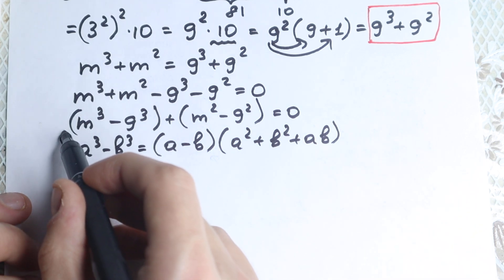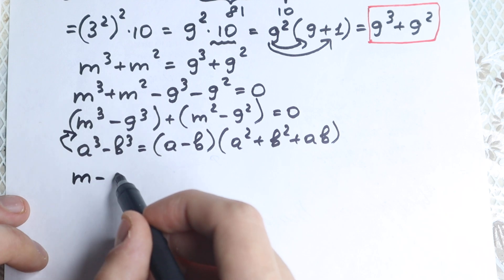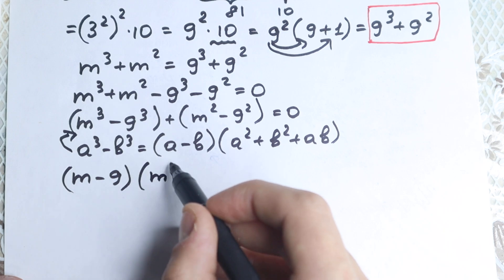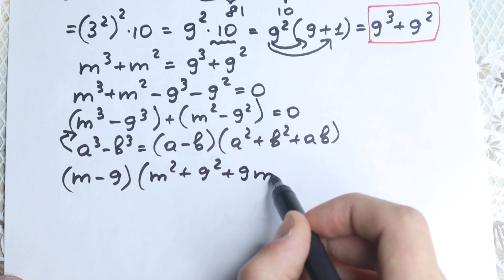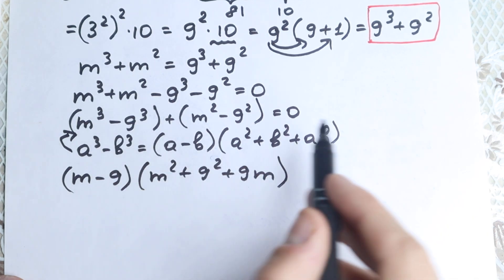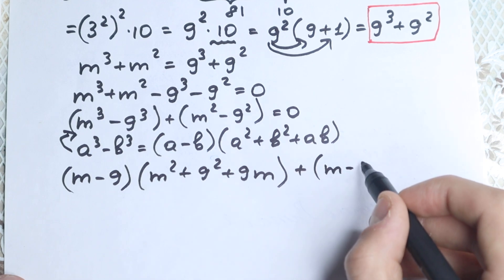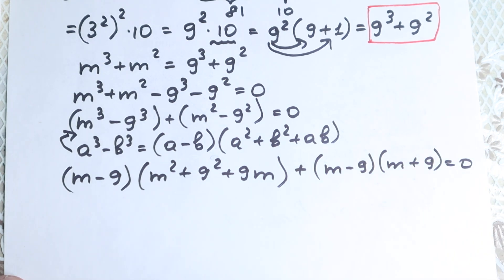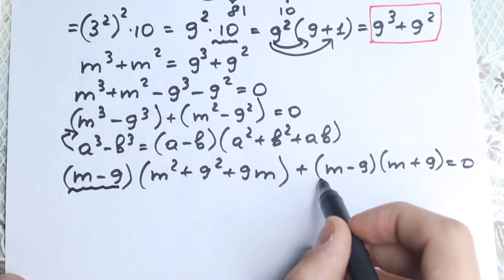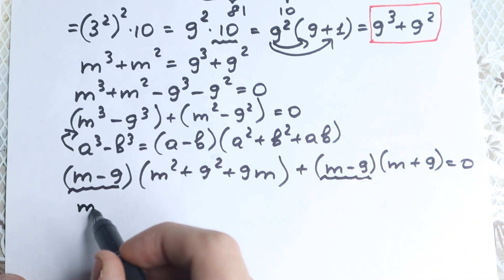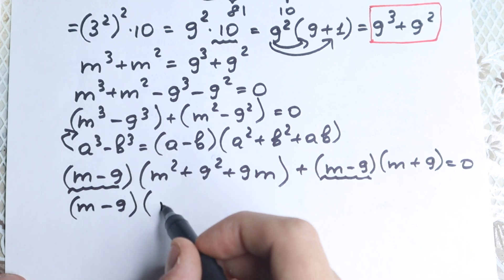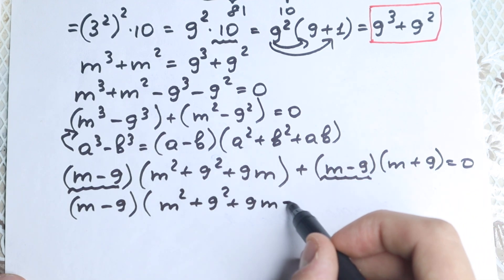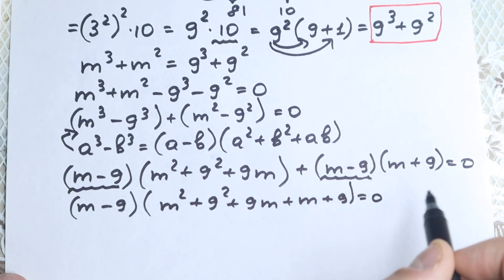Applying the difference of cubes formula: (m minus 9)(m squared plus 9 squared plus 9m), plus applying the difference of squares: (m minus 9)(m plus 9) equals zero. Now (m minus 9) appears in both terms, so we factor it out: (m minus 9) times (m squared plus 9 squared plus 9m plus m plus 9) equals zero.